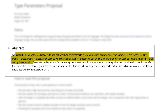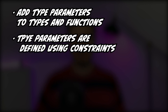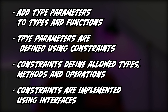The proposal states that the developers suggest extending the Go language to add additional type parameters to types, functions, and declarations. Type parameters are constrained by interface types. Interface types, when used as type constraints, support embedding additional elements that may be used to limit the set of types that satisfy the constraint. Let me translate that into human language: they suggest adding type parameters to types and functions. These type parameters are defined using constraints, which in turn define allowed types, methods, and operations available for the specified generic type. So they constrain what you can do with variables of that type — hence the name. And Golang internally uses interfaces to accomplish these constraints.